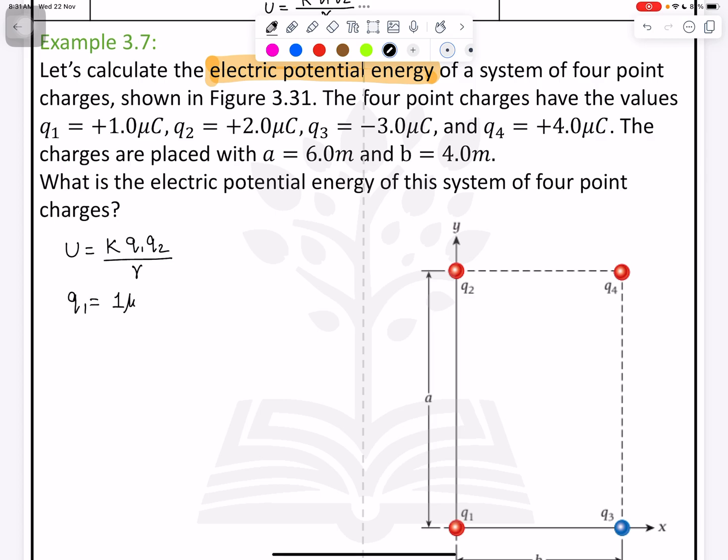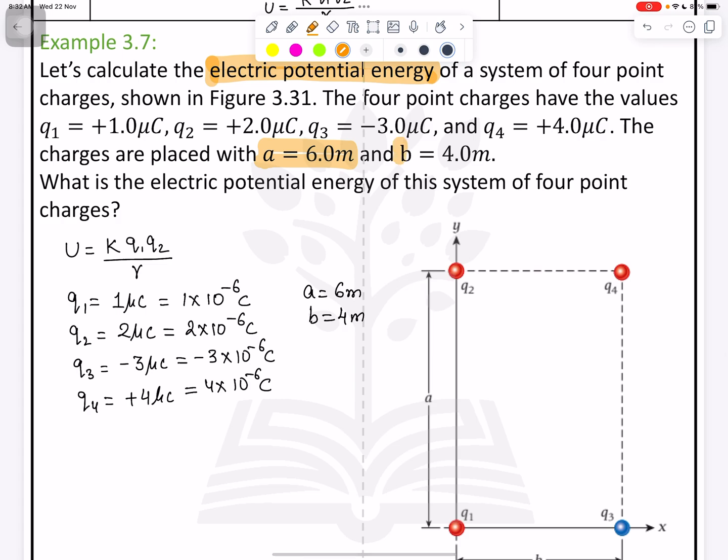Q1 is 1 microcoulomb which equals 1 times 10 to the negative 6 coulombs. Q2 is 2 microcoulombs which equals 2 times 10 to the negative 6 coulombs. Q3 is negative 3 microcoulombs, negative 3 times 10 to the negative 6 coulombs. And Q4 equals plus 4 microcoulombs, 4 times 10 to the negative 6 coulombs.